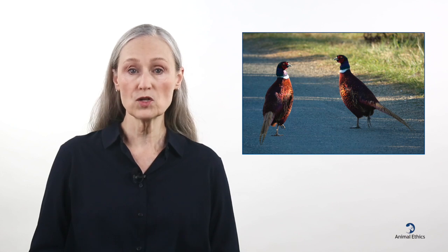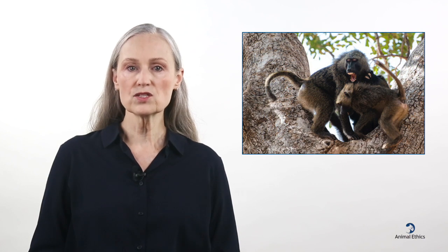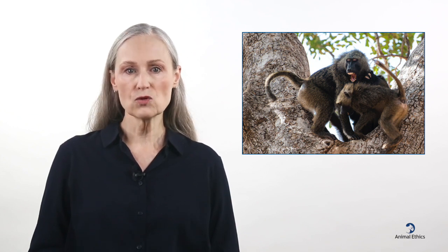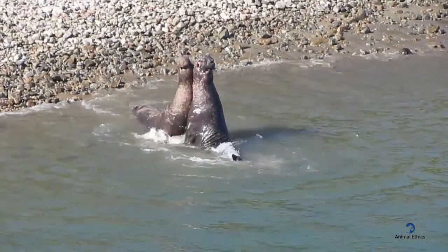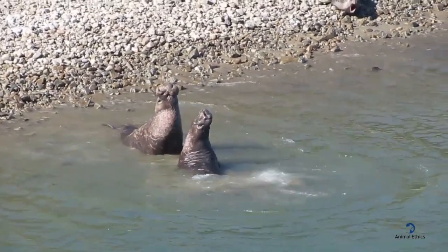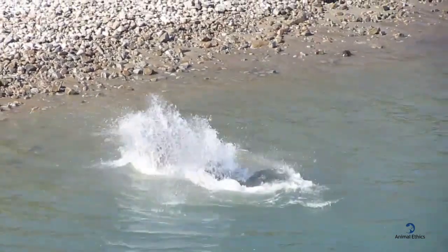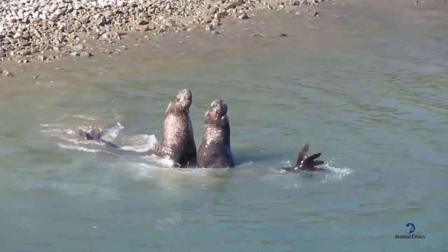Polygyny is a mating system in which a single male lives and mates exclusively with multiple females. This system has been observed in elephant seals, gorillas, pheasants, and baboons. Since the numbers of males and females in most species are approximately equal, polygynous mating systems lead to competition between males for access to females. Elephant seal males fight to control a beach and thereby have exclusive mating rights over the females in that territory. A successful male can have a harem of up to a hundred females, while most males will not have a chance to mate at all. The fights between males can be brutal, especially when the males are evenly matched.